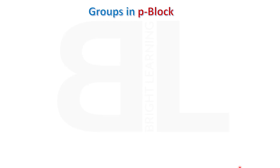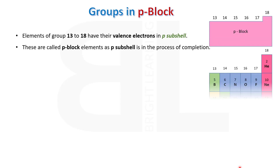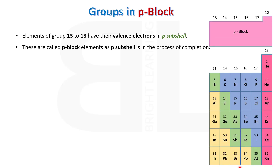Now let's look at the groups in P block elements. Elements of group 13 to 18 have their valence electrons in P subshell. These are called P block elements, as P subshell is in the process of completion.